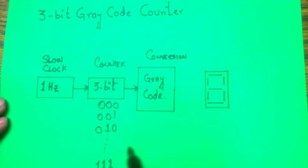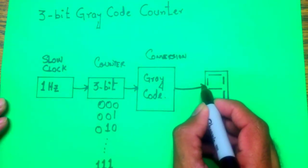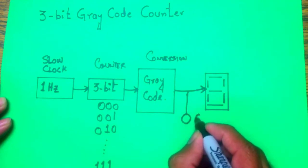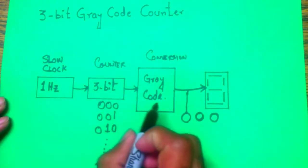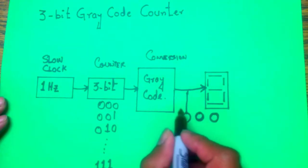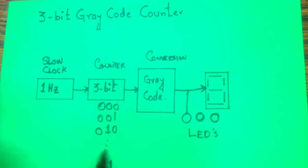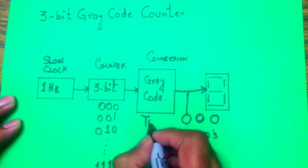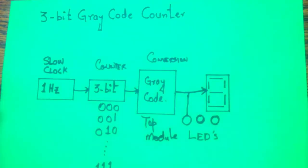In this experiment you can either display the answer on a seven-segment display or on LEDs. I want to use LEDs here — in another project I'll show how to display the conversion on a seven-segment. We'll use three LEDs to display the 3-bit gray code counter. We need three modules total, with a top module that instantiates the counter and the slow clock.